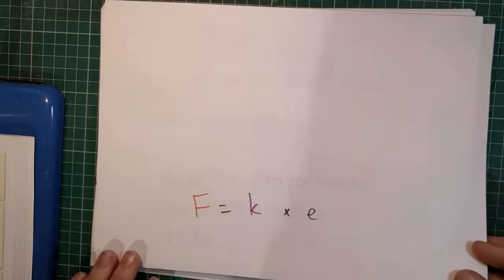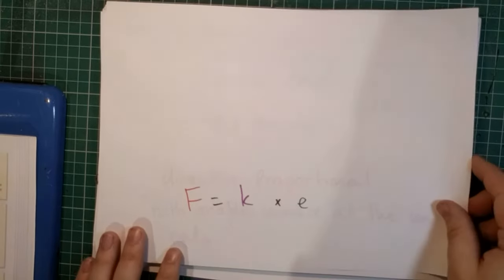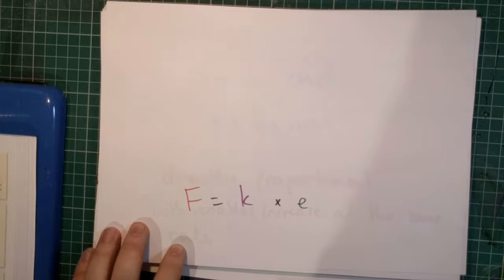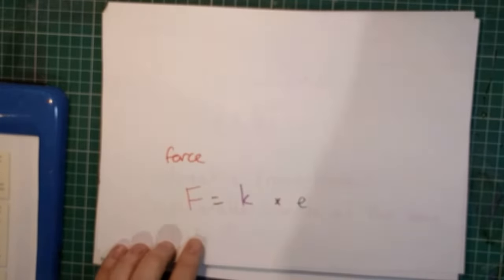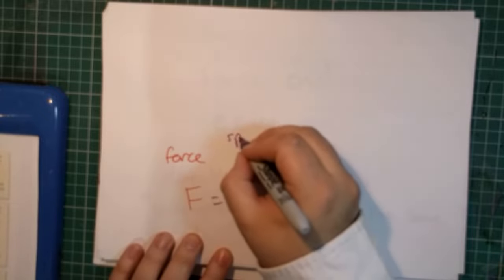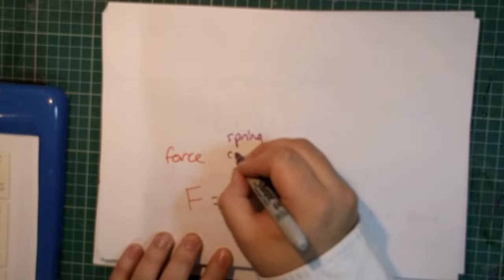Now, the relationship is described using this formula here, where F equals force. Then you've got K, which is the spring constant.